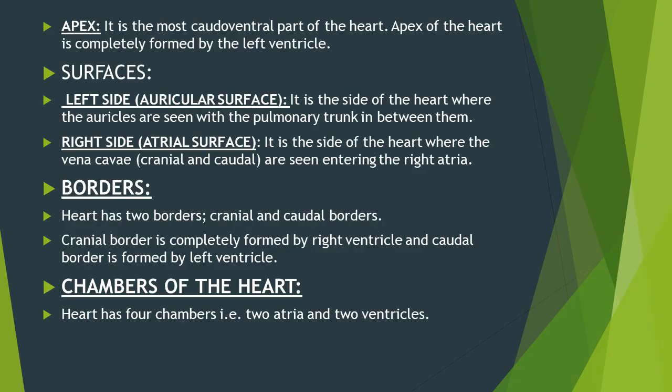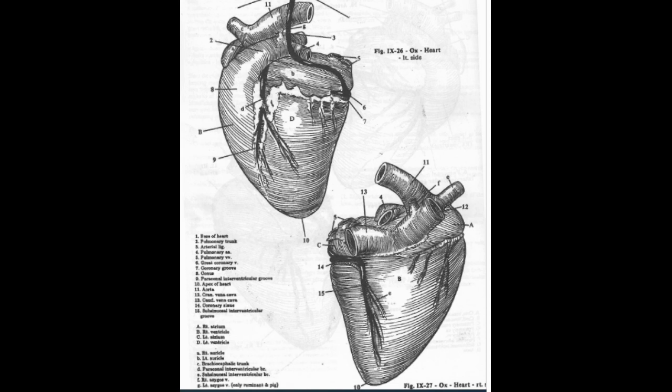There are two surfaces of the heart. The left surface is called the auricular surface and the right surface is called the atrial surface. On the left side of the heart, auricles can be seen with the pulmonary trunk in between them, and therefore the left side is called the auricular surface.